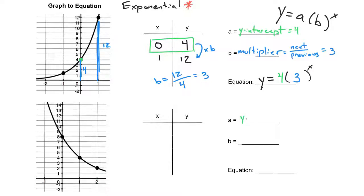Our A value is still going to be our y-intercept, so we have to figure out what that is. Our B is going to be that multiplier, which is your next over previous. As we write in our points, we first see that we have 0, 8 as the first point given to us. The second point here is at 1, 4, and you can put 2, 2 on there as well, which is this final point.